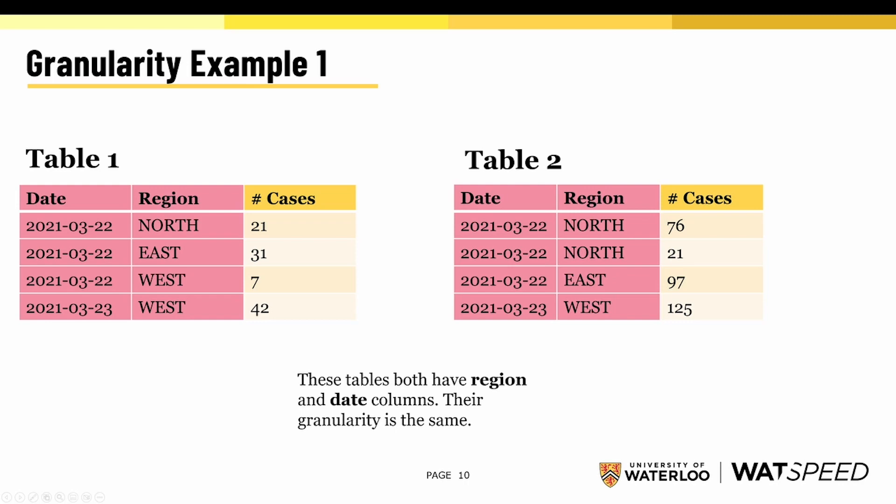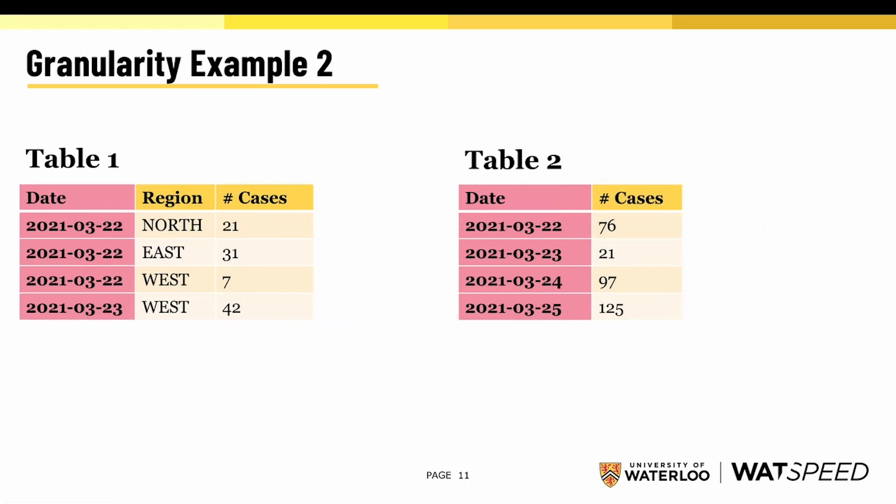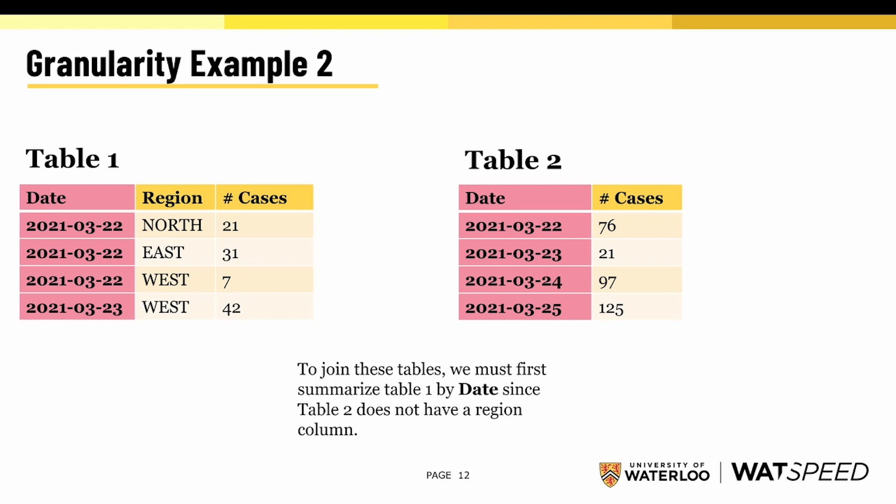Let's take a look at a second example of granularity. Now we have two tables, table 1 and table 2. Table 2 does not have a region column. So in order to join these two tables together, we have to first summarize table 1 by the date column, since we do not have a region column in table 2. We need to summarize table 1 to match the granularity of table 2.